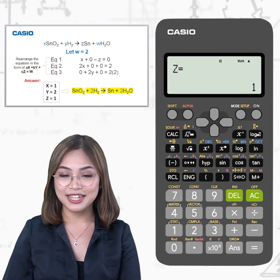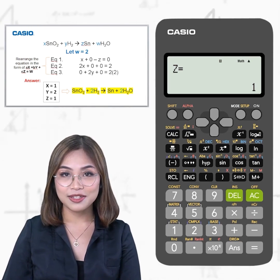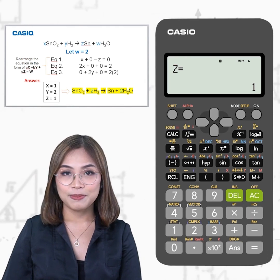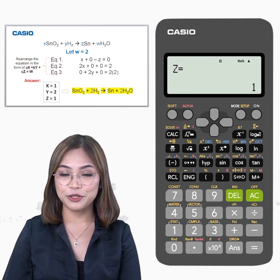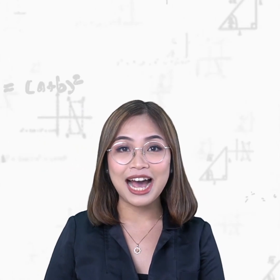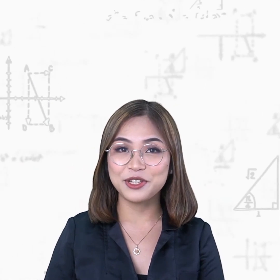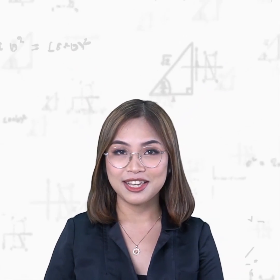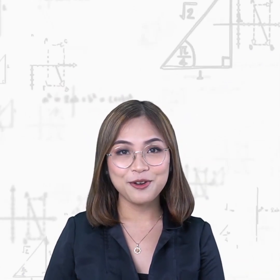The final answer is SnO₂ plus 2H₂ yields Sn plus 2H₂O. That's it for today's video. I hope that you learned how to utilize your Casio FX 570ES Plus 2nd Edition in balancing chemical equations. Thank you and see you in our next videos.